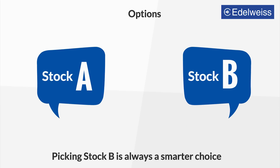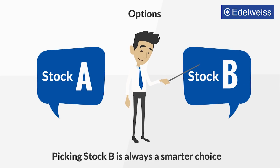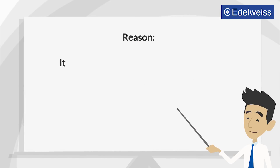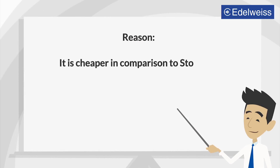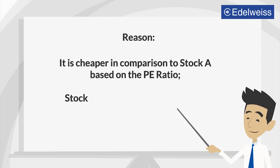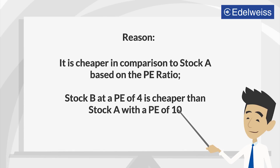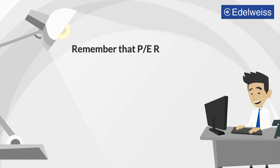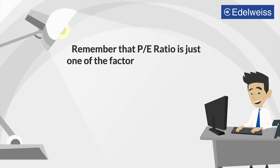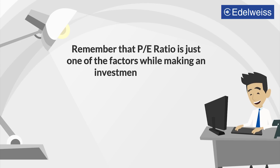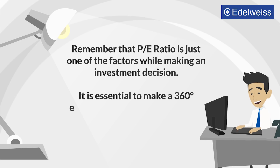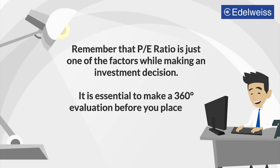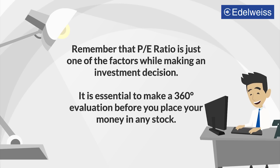All other factors being constant, picking stock B is always a smarter choice. Because it is cheaper in comparison to stock A based on the P-E ratio — stock B at a P-E of 4 is cheaper than stock A with a P-E of 10. P-E ratio often helps you determine which stock is the wiser investment option. Remember that P-E ratio is just one of the factors when making an investment decision. It is essential to make a 360-degree evaluation before you place your money in any stock.